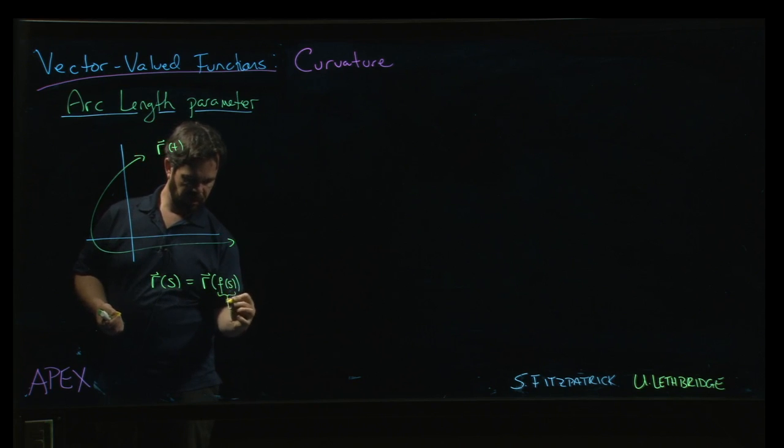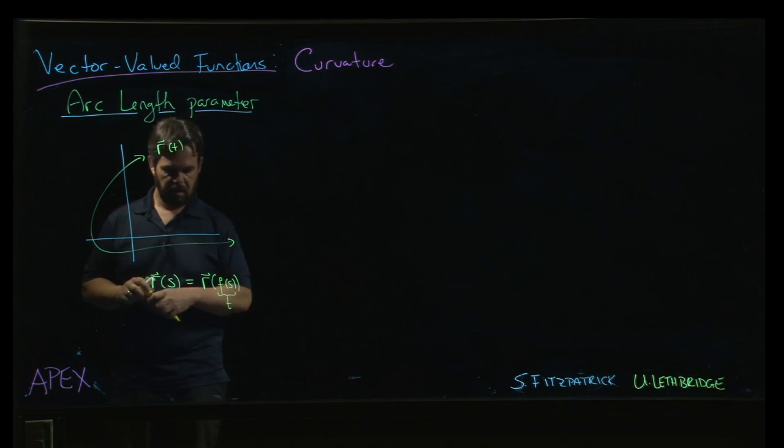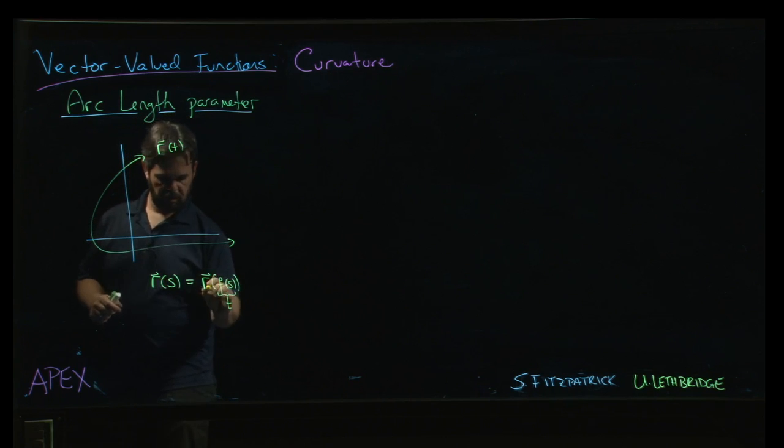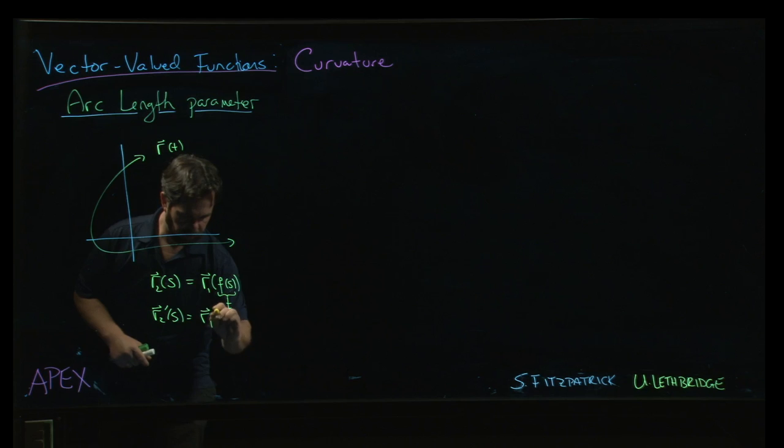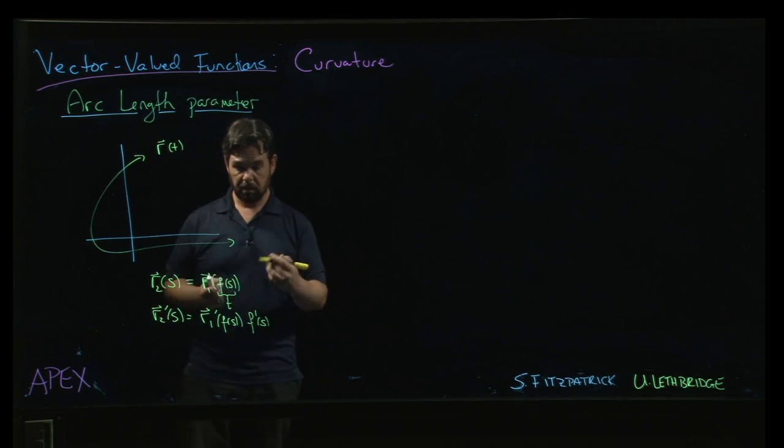And so maybe this is actually t. When you calculate the derivative of this, chain rule says that you're going to get r1 prime at f of s and then multiply by f prime. You get this f prime scalar multiple.